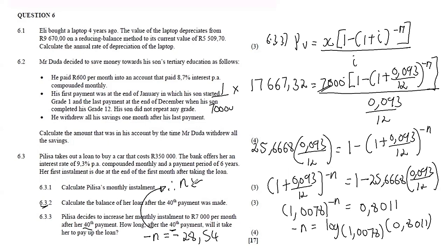In conclusion, it will take approximately 29 months to pay off the loan after the 48th payment. In the previous question the remaining payments were 32 months, but by increasing the installment to R7 000, she finishes in just 29 months. In total: 48 plus 29 equals 69 months, compared to the original 72 — saving three months, which is still significant.